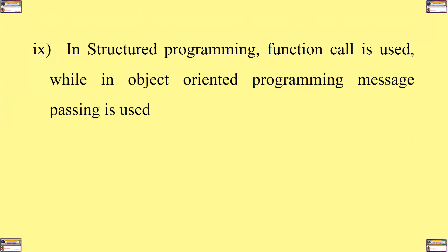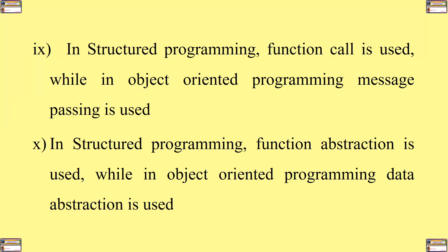Number nine, in structured programming, function call is used, but in object-oriented programming, message passing is used. Number ten, in structured programming, function abstraction is used, while in object-oriented programming, data abstraction is used.